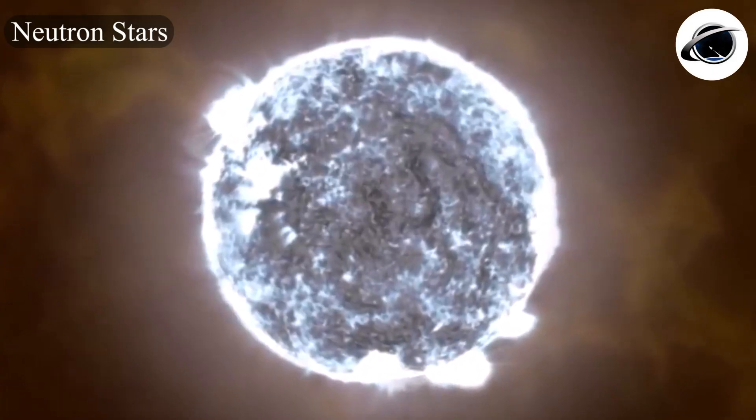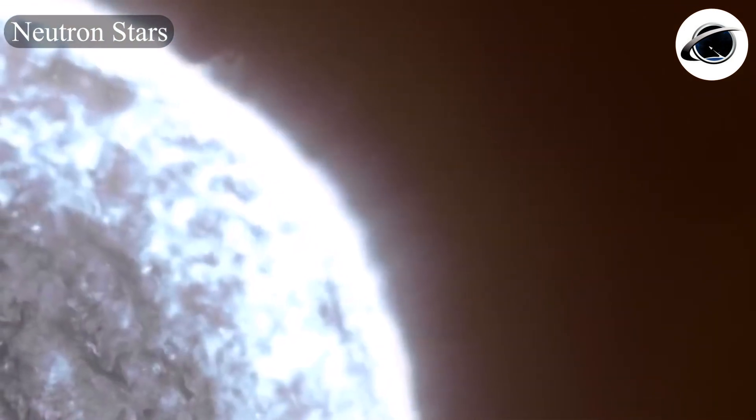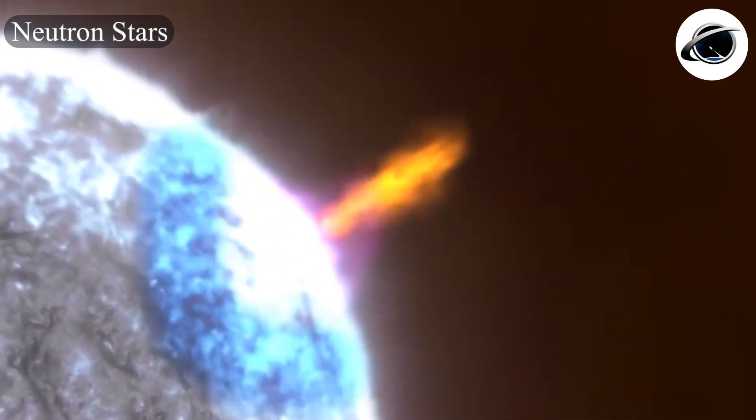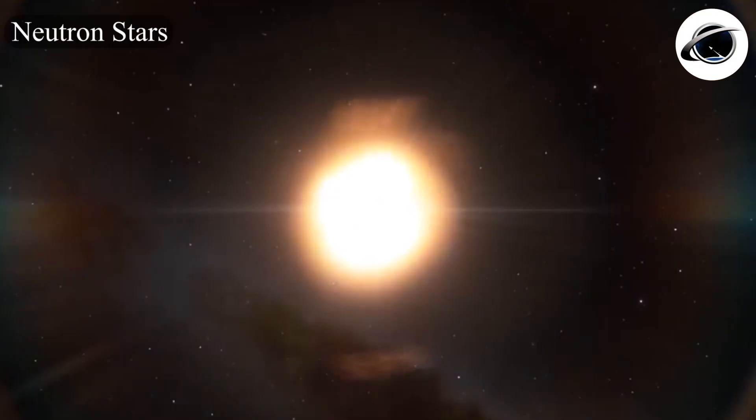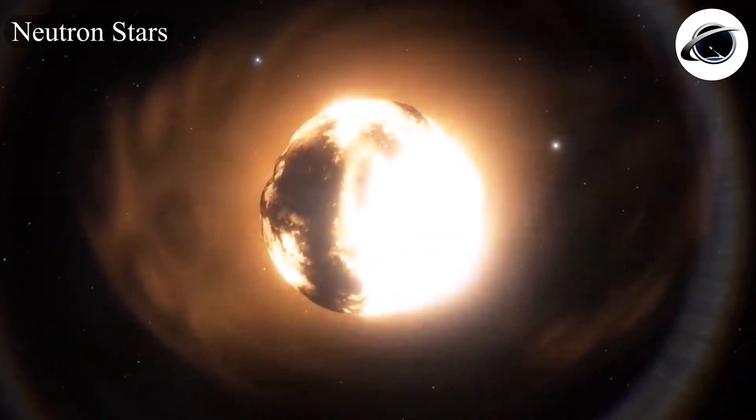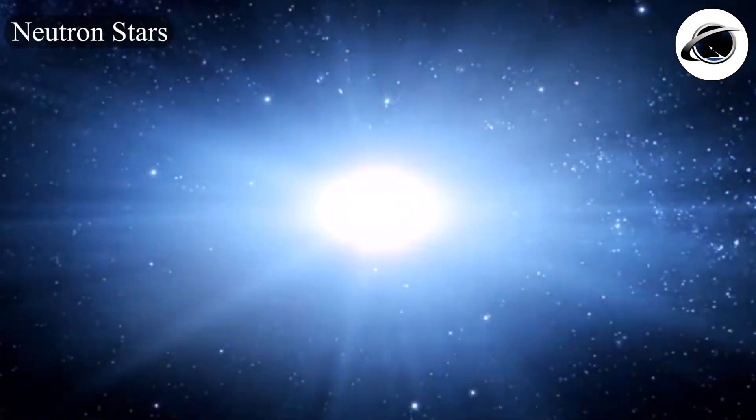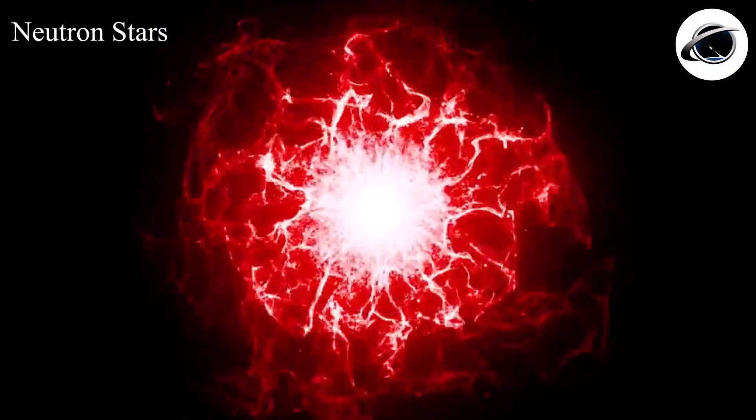Some other types of neutron stars are the magnetar, the soft gamma ray repeater, the anomalous X-ray pulsar, and the intermediate mass X-ray binaries. These stars are formed when a massive star runs out of fuel and collapses.